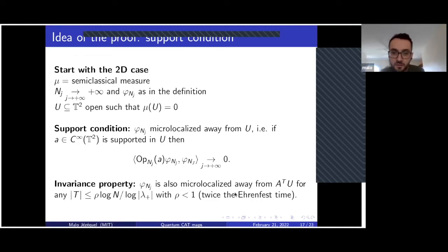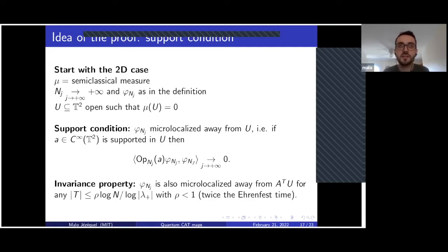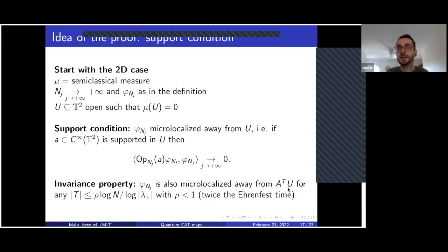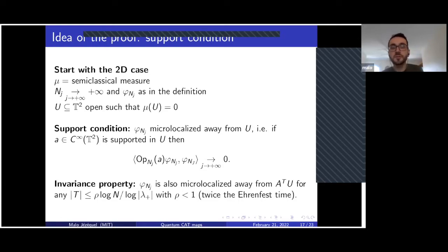Why can we go up to twice the Ehrenfest time? This is because when you compose an observable by an iterate of A, the derivative will explode in the unstable direction, but in the stable direction it will become better and better. Using this fact, we can get something slightly better than the usual Egorov estimate. You want to use these two facts to say that actually there is no mass for phi_{N_j} anywhere.